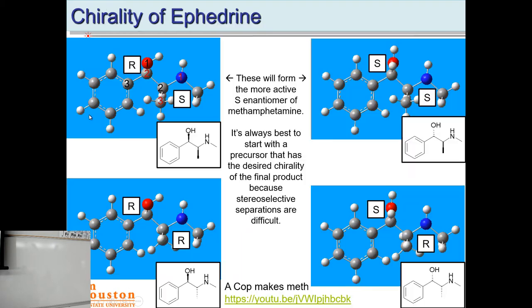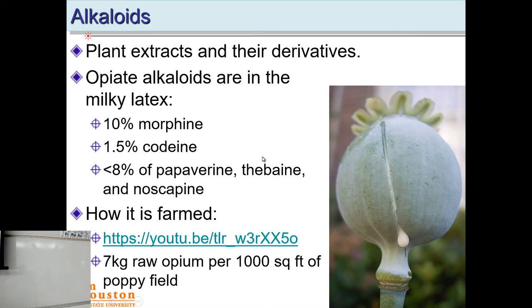That's methamphetamine. This is ephedrine — you just replace that OH group with a hydrogen, and you've got methamphetamine. Now let's look at some of the other plant extracts.